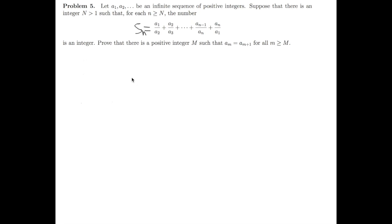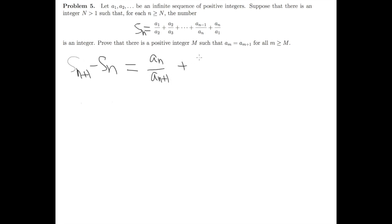The problem tells us a sequence of positive integers a_i satisfies the following: the sum S_n is an integer for large enough n. The natural idea is to subtract S_n from S_{n+1}, because this cancels out the first term and gives only three terms remaining: a_n over a_{n+1} plus a_{n+1} over a_1 minus a_n over a_1.